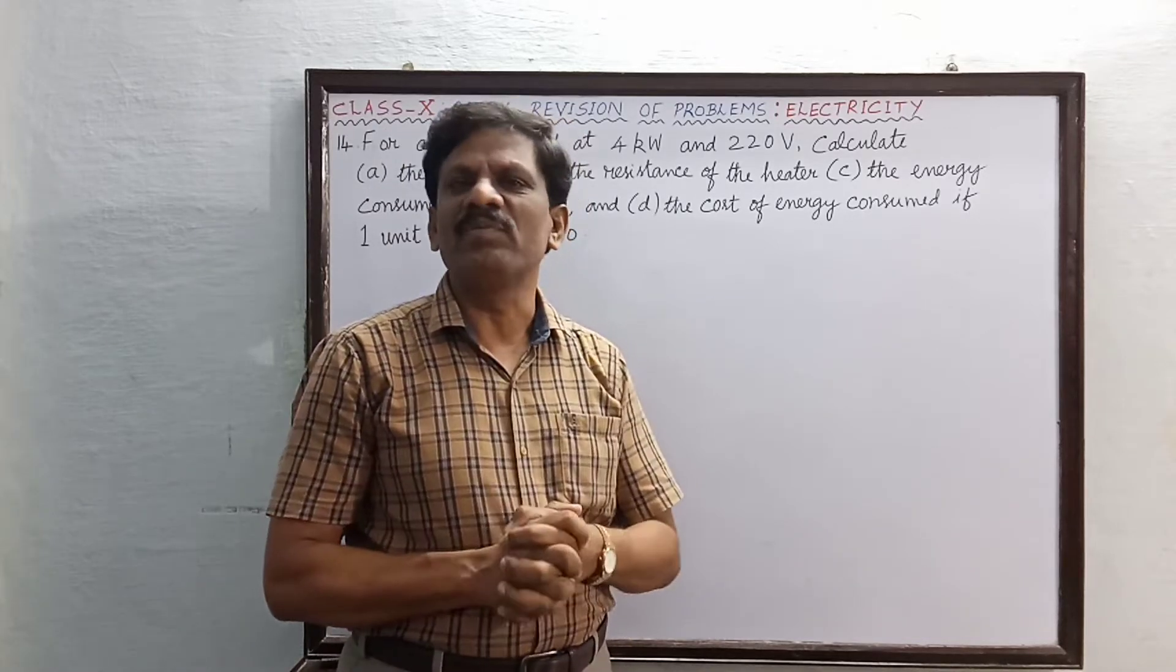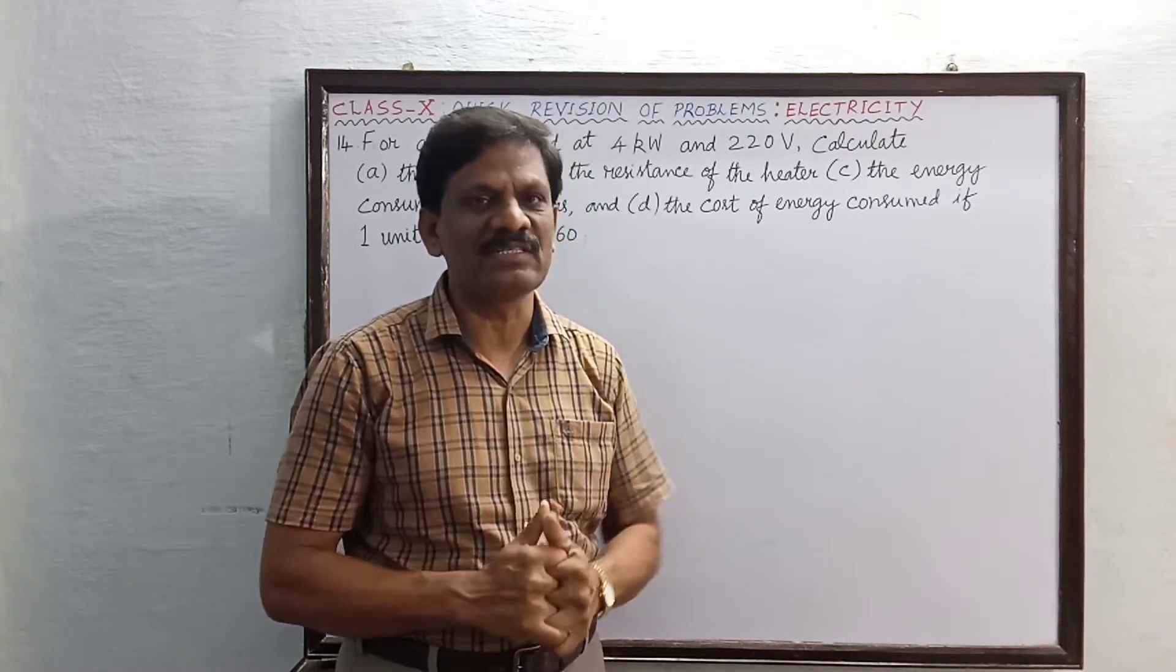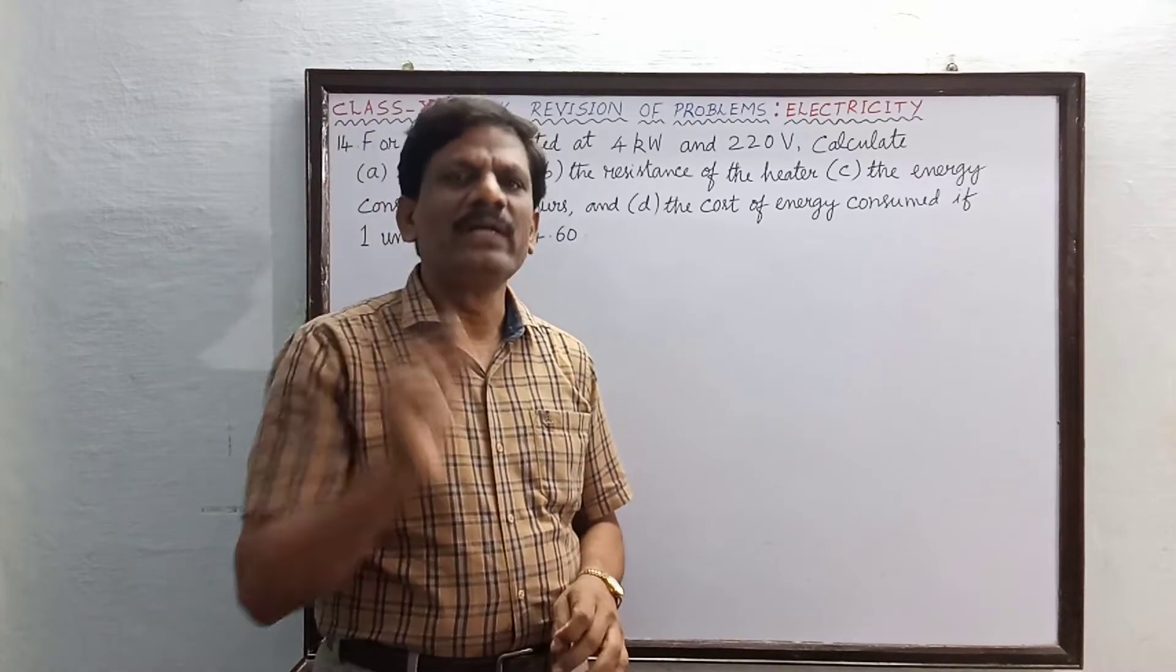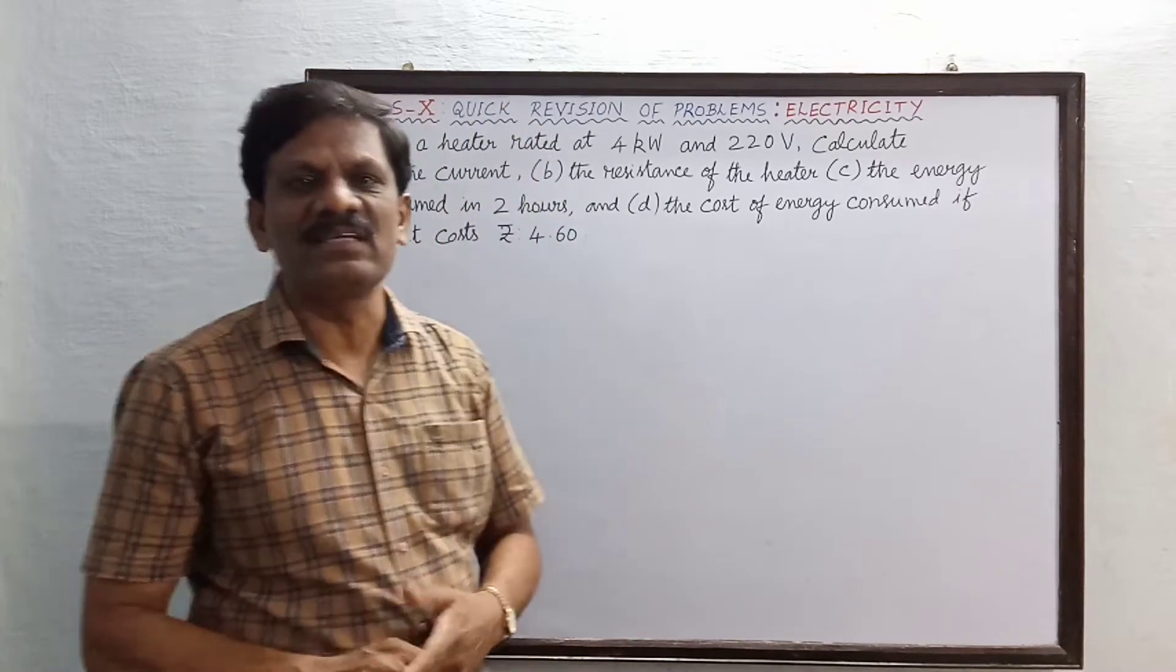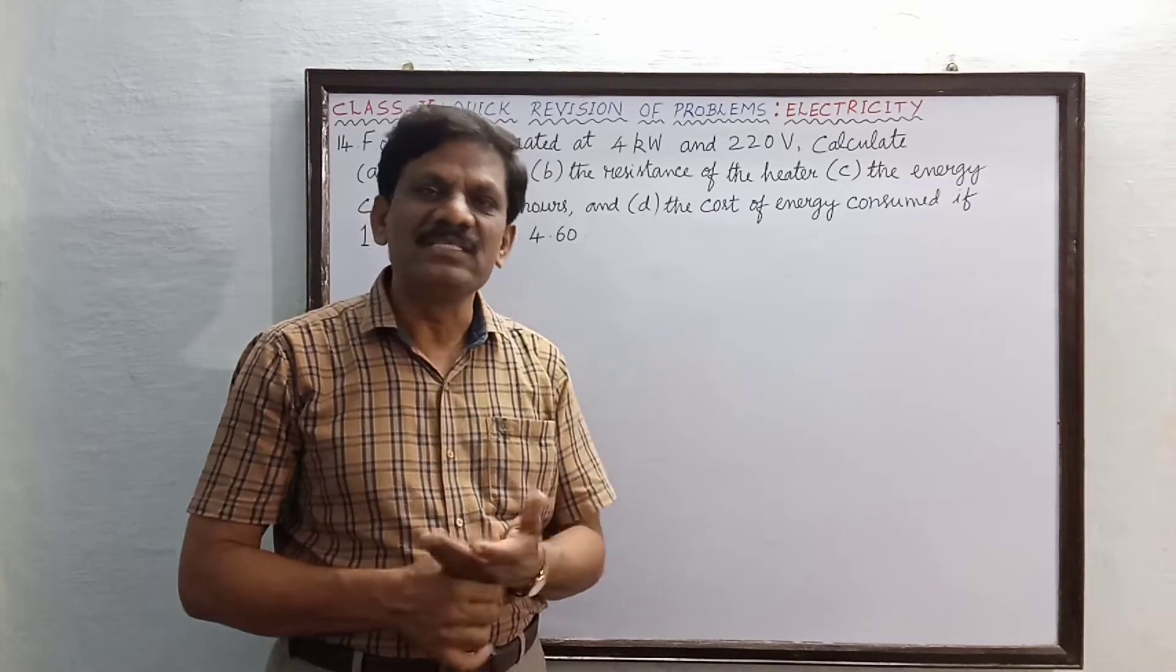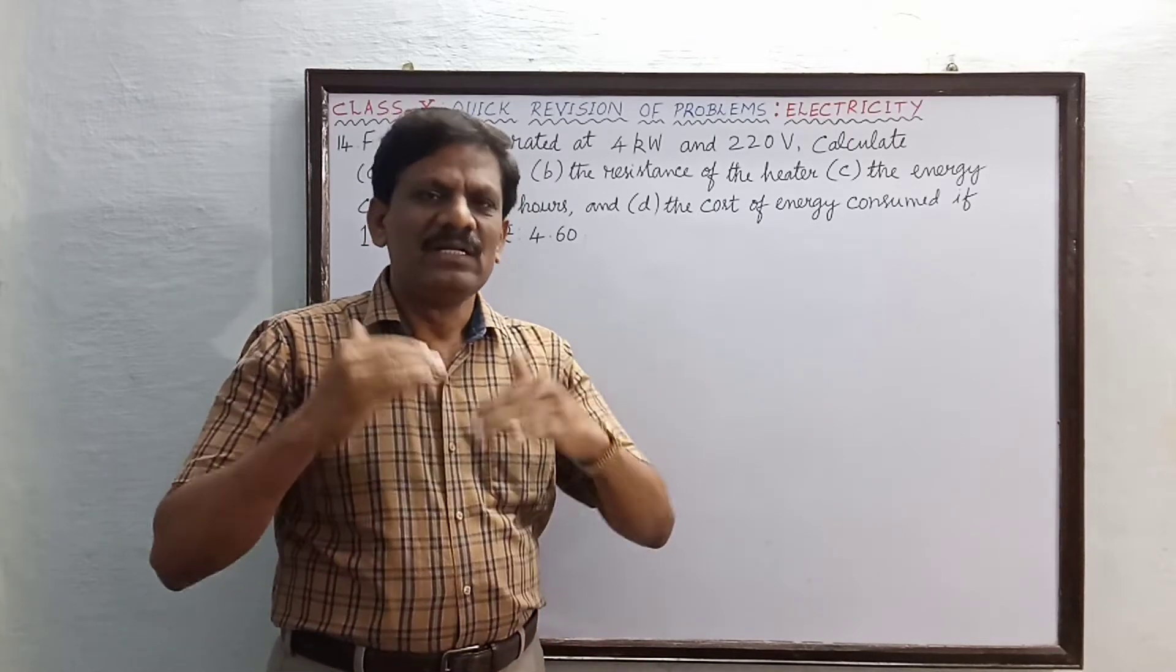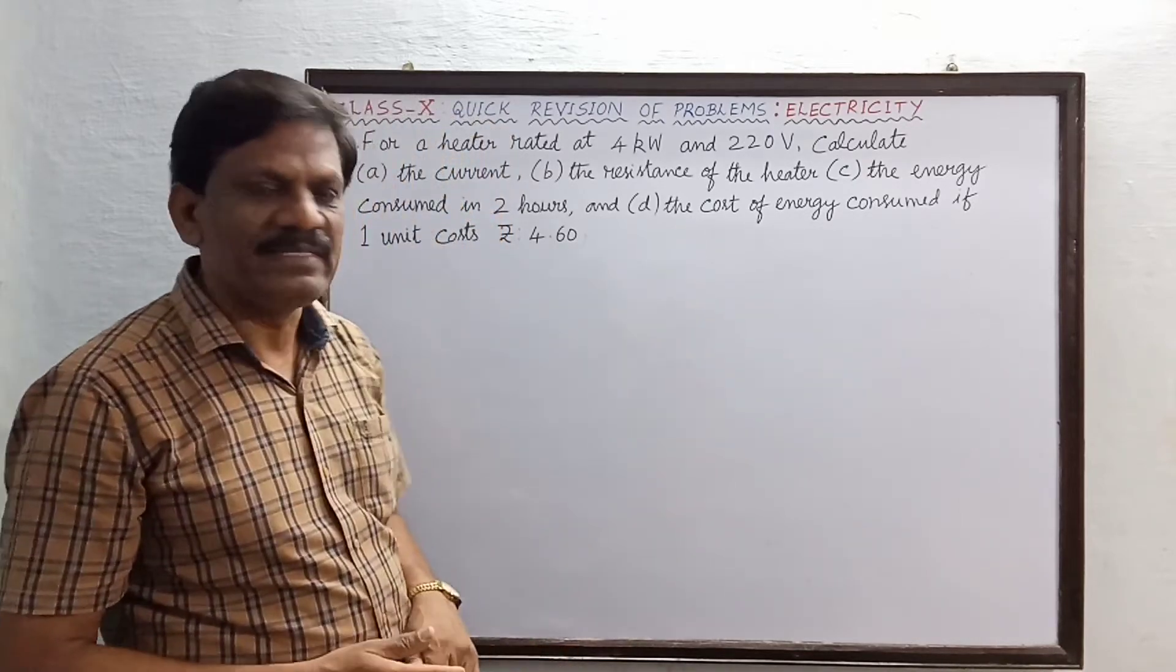This is a very important problem. This type of problem you can expect in the CBSE board examinations. This is only one type of electrical device, one heater is given. Sometimes in combination to the heater, one electric iron, electric kettle or bulbs together will be given. We will be slowly marching towards the difficult problems. This one is very easy.